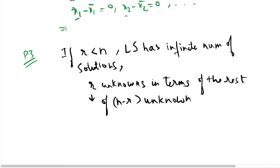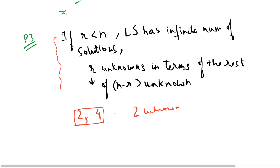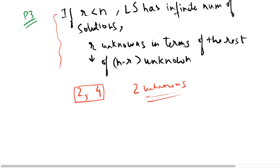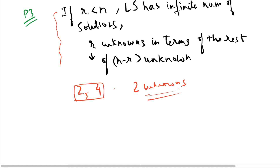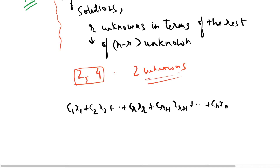For example, if rank is 2 and the number of unknowns is 4, then the linear system has infinitely many solutions, and you can represent 2 unknowns in terms of the other 2. We write the linear system as c₁x₁ + c₂x₂ + ... + cᵣxᵣ + cᵣ₊₁xᵣ₊₁ + ... + cₙxₙ = b, where cᵢ are column vectors and xᵢ are unknowns.